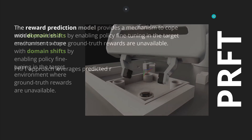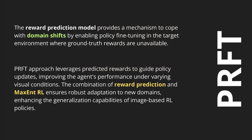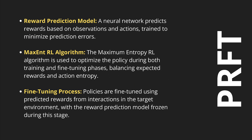We have a combination of the reward prediction function and maximum entropy reinforcement learning. In detail, we have three components: the reward prediction model, the maximum entropy reinforcement learning algorithm balancing expected reward and action entropy, and a fine-tuning process of our policies. Importantly, this fine-tuning happens in the target environment with the reward prediction model frozen.